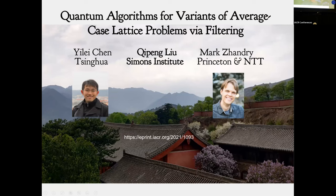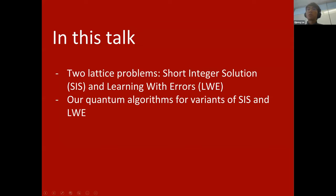Second talk: Today I will be talking about our work on quantum algorithms for variants of average-case lattice problems via a new technique we call filtering. This is joint work with my co-author Ellie Chen and my PhD advisor Mark Zhandry. I will start by recalling the two lattice problems widely used in cryptography — SIS and LWE — then introduce the variants we consider and show how our algorithm works. Although our algorithm is novel and solves various lattice problems in interesting parameter regimes, none of the results give applications to solving SVP, the most fundamental lattice problem.